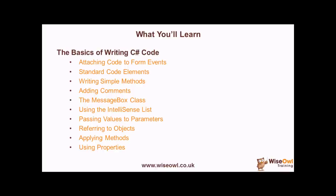We'll look at how the IntelliSense list works to make sure you get as much help as possible when you're writing your code, talk about standard things like passing values into parameters, and also how to refer to objects, how to apply methods to those objects, and then how to use those objects' properties. So it's a relatively simplistic set of code we're going to write, but it will give you a nice grounding in understanding how to write simple C-Sharp code. So let's get started.